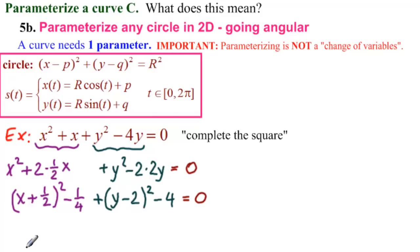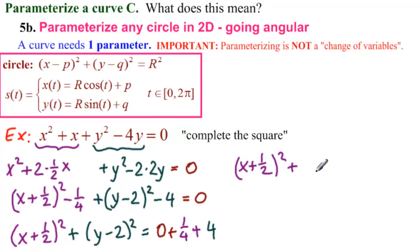So, now we're almost there. You can see it almost. (x + 1/2)² + (y - 2)². And on this side we have 0 + 1/4 + 4. So, that gives us (x + 1/2)² + (y - 2)² = 17/4.